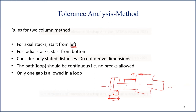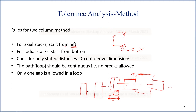Starting from the bottom is just a convention — you can start from the top also. But our convention from school is: positive X is to the right and positive Y is upward. We follow that same convention. Moving from left to right is positive. For axial stacks, start from the left so you get a positive result — if there's a gap between two parts, starting left and ending right gives a positive value, meaning there is a gap. For radial stacks, start from the bottom and go up, always moving toward the positive direction.